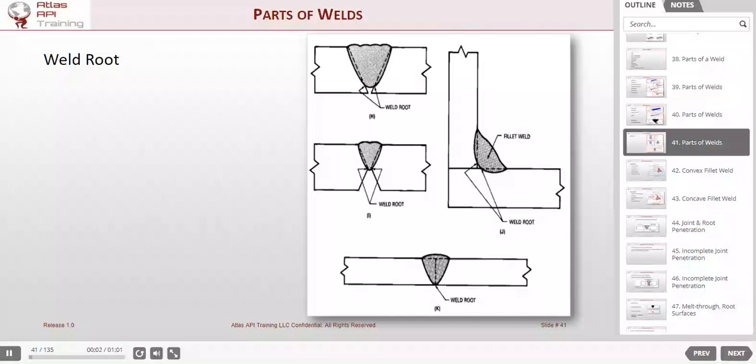And now we have some examples of different root locations. If you'll notice here, we've got a single V groove on H, and the weld does not fully penetrate the groove. The weld root is not all the way into the joint root. So we would call that incomplete penetration.